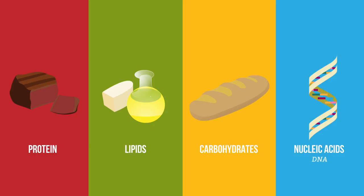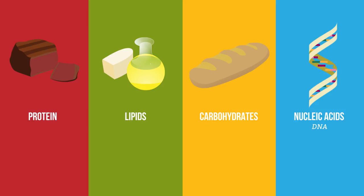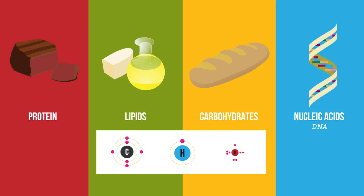So what are these all made of? Well, carbohydrates and lipids are really simple. They just contain three elements: carbon, hydrogen and oxygen.